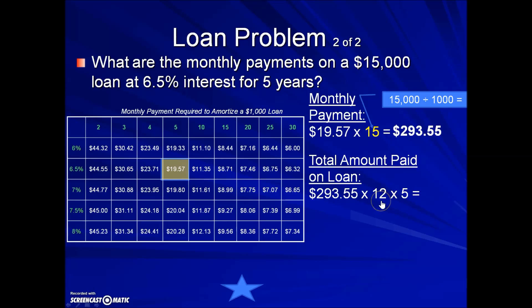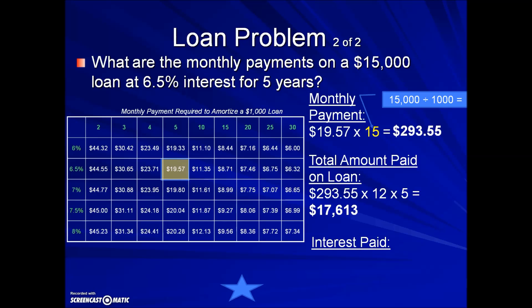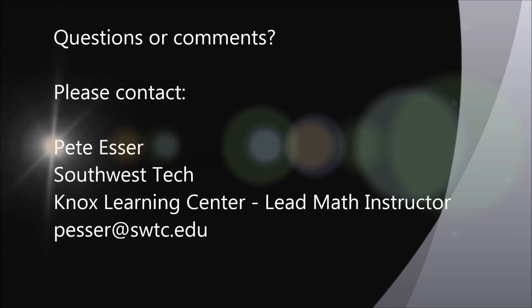There are 12 months in a year. Over the course of the term of this loan — five years — that results in a total amount paid of $17,613. Once we have the total amount paid compared to the initial amount borrowed, the difference between those two values gives us the interest paid, or the cost of this loan.